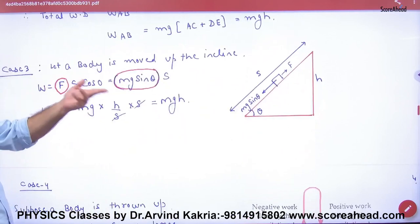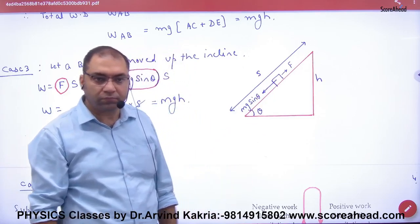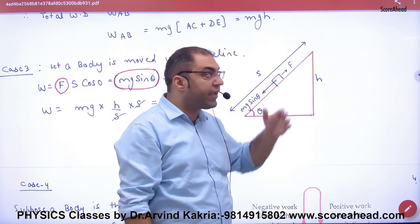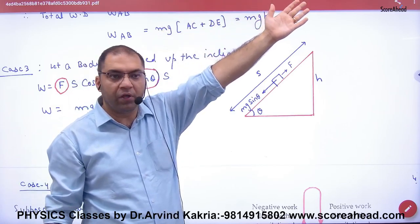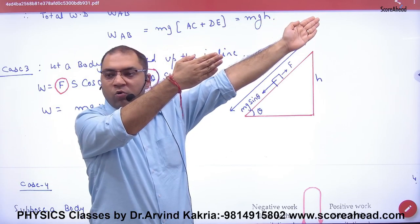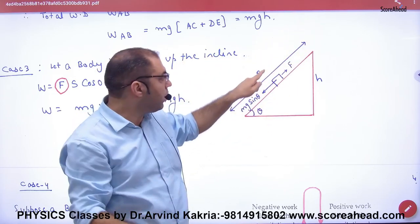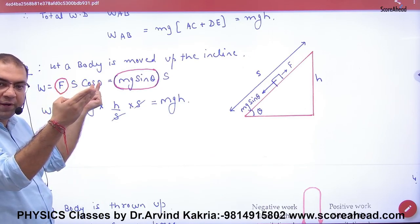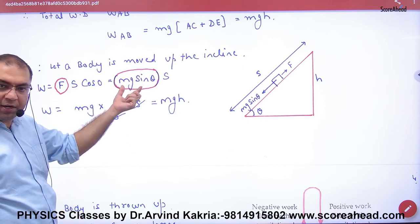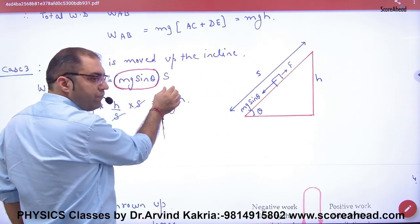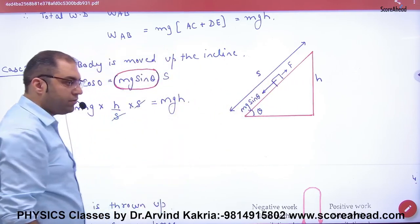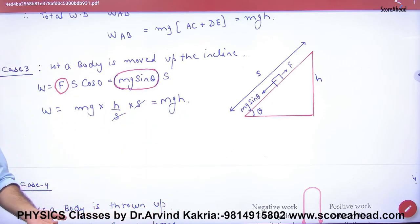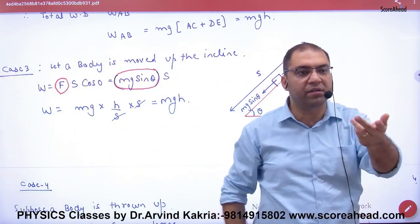The third case is along an inclined plane. The vertical height is H and the displacement along the incline is S. The force along the incline is MG sin θ, and the angle between force and displacement is 0. Work done equals MG sin θ times S times cos 0. Since sin θ equals H over S, S cancels and the answer is MGH.